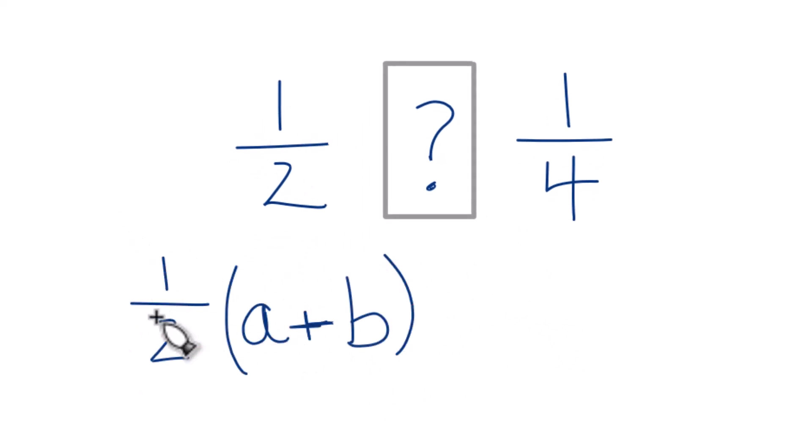We have 1 half times A plus B. This is A here, and this is B here. So that gives us 1 half times 1 half plus 1 fourth. So we need to add these fractions together.